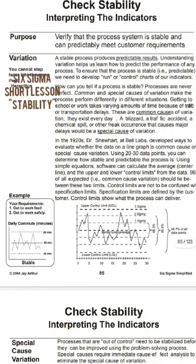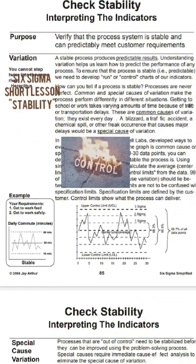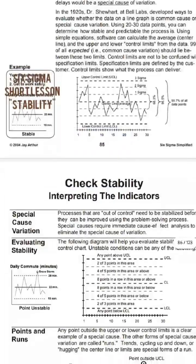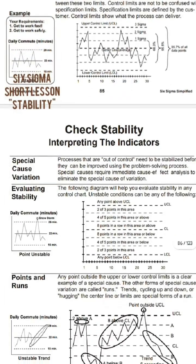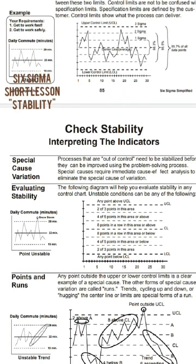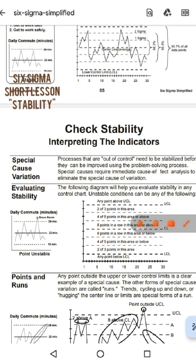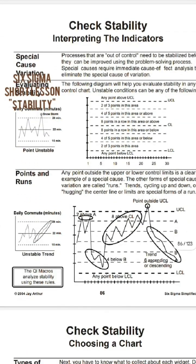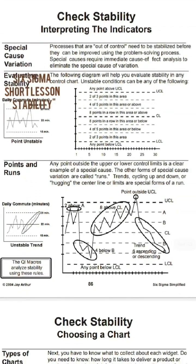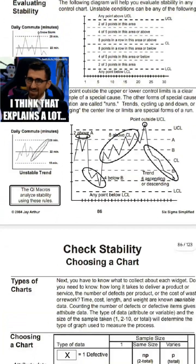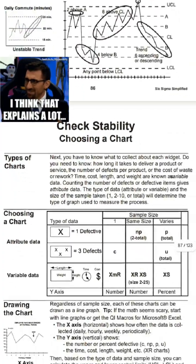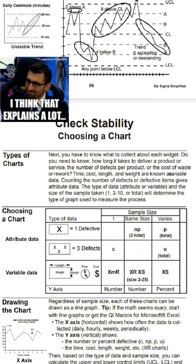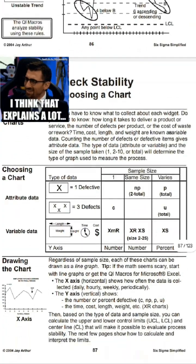Particularly when it comes to variable control charts, as you all know, there are eight interpretation rules — all of them have been well explained. It also explains why patterns are still called special causes even when values are well within the limits.